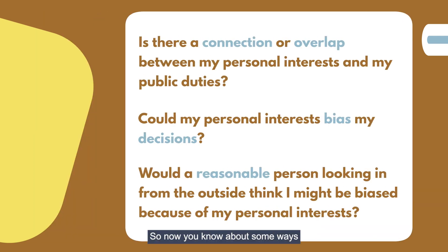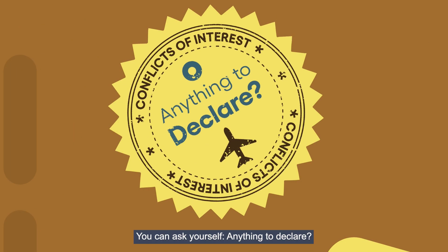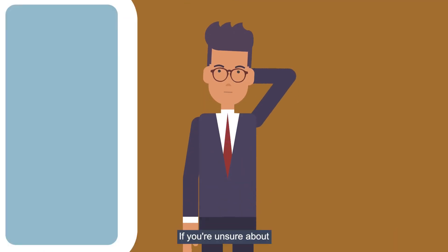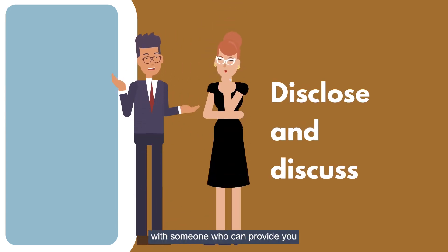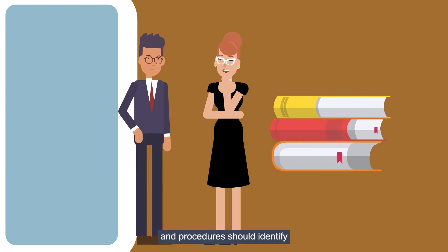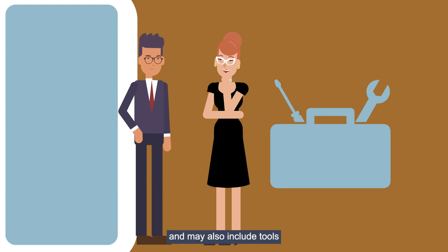So now you know about some ways to identify conflicts of interest. You can ask yourself: anything to declare? If you are unsure about whether you have a conflict or not, disclose and discuss the situation early with someone who can provide you with advice. Your authority's policy and procedures should identify who you can speak with, and may also include tools to help you identify a conflict of interest.